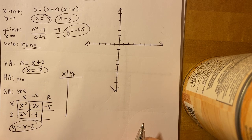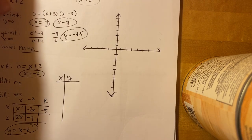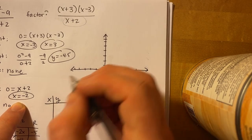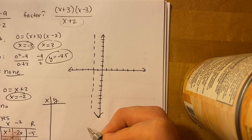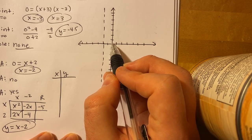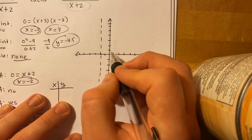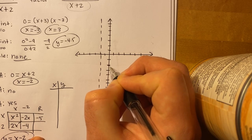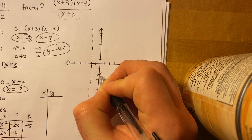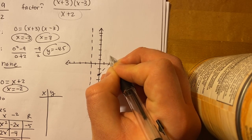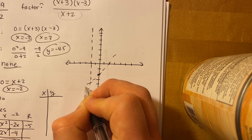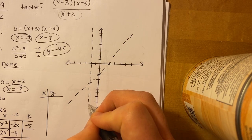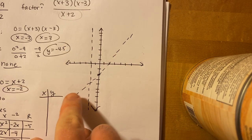Now we have all the information to graph. Step 1 as always: draw your asymptotes. The vertical asymptote is at x = negative 2, so draw a dotted line there. For the slant asymptote y = x − 2, use your algebra 1 skills: the x-intercept is at negative 2 and the slope is positive 1, so go up 1 over 1 to sketch a few points as a dotted line.